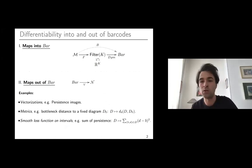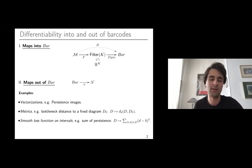What about maps out of barcodes? We have plenty of examples. We have all those vectorizations, those kernels such as persistent images, but we also have more statistical kinds of maps like metrics, the bottleneck distance to a fixed diagram, or we could think of Fréchet functionals or maybe Wasserstein metrics. And finally, smooth loss functions on intervals - a linear combination of a smooth function applied on an interval, for instance the sum of lengths.